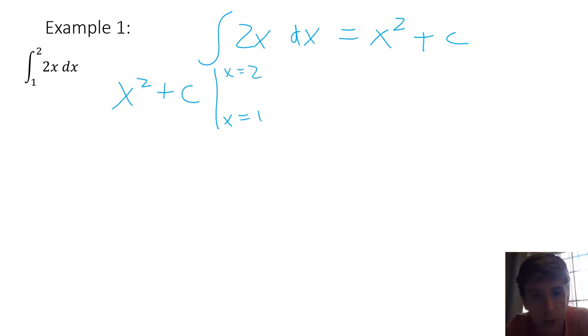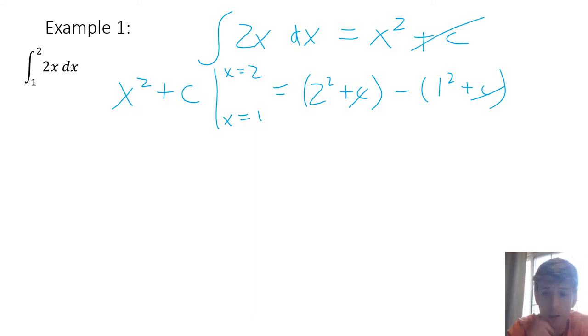I'll keep the C around for now, just to make you guys aware about why going forward we don't need to worry about it for definite integrals. Now that I have that x squared plus C, I'm going to evaluate it from x equals 1 to x equals 2. That big bar means we're about to plug in those numbers. I plug in x equals 2, so that's 2 squared plus C, and then I plug in 1, 1 squared plus C. Notice the C's cancel out, and that will happen every time, so going forward, you do not need to worry about the plus C for definite integrals.